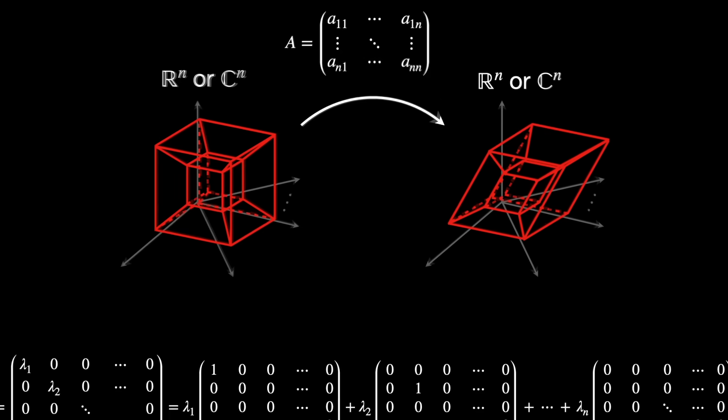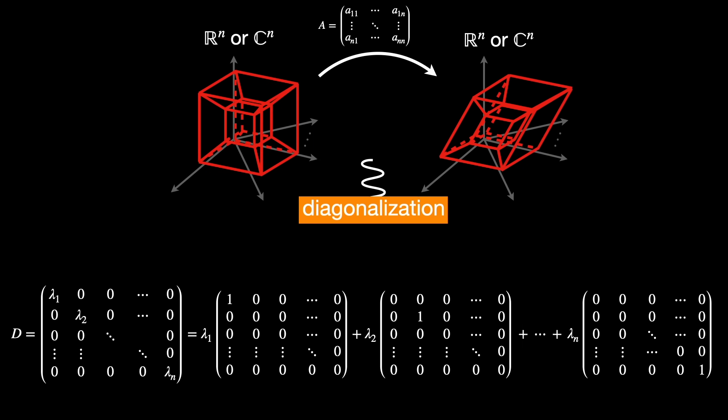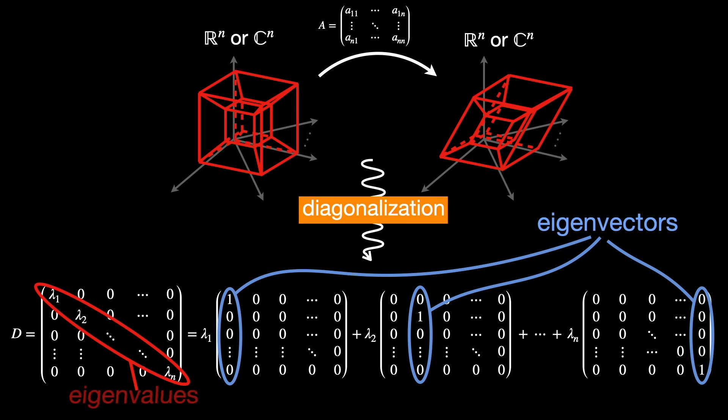One powerful tool is diagonalization, which means rewriting a matrix in simpler form using its eigenvalues and eigenvectors. These eigenvectors point in directions that are unchanged by the transformation, except for scaling. And the eigenvalues tell us the amount of scaling.